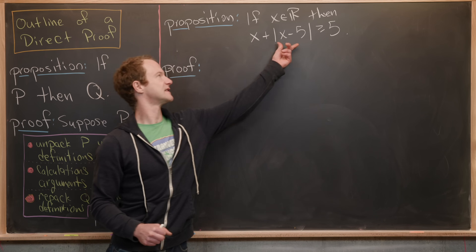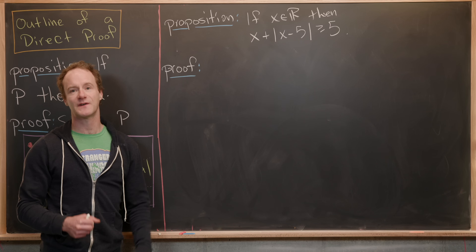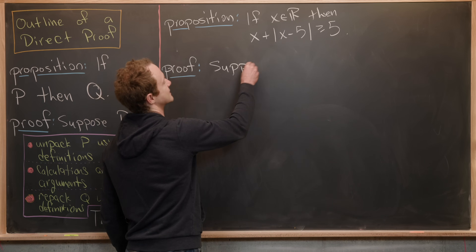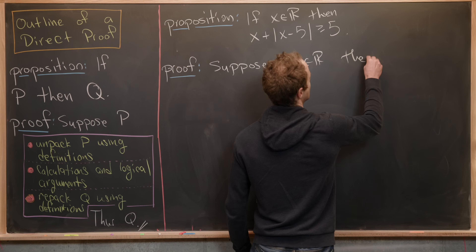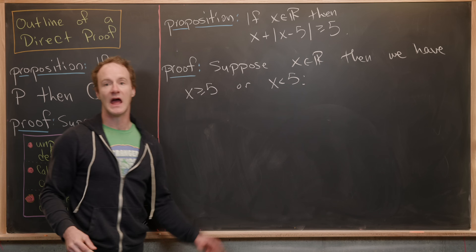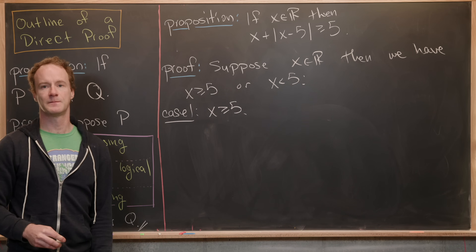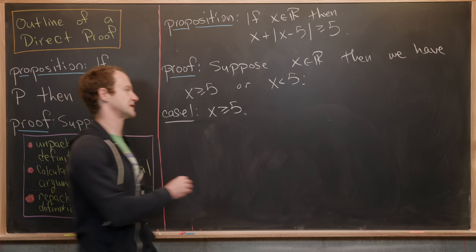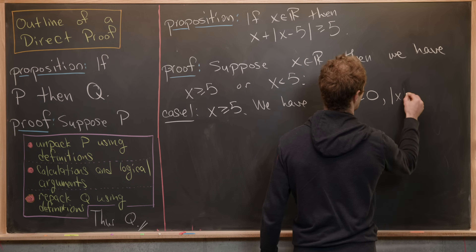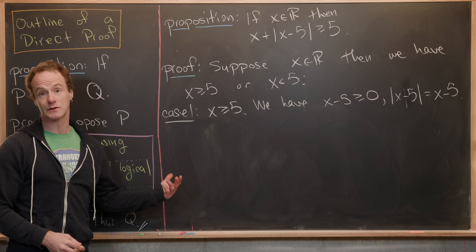The two cases depend on the absolute value. Something changes at x = 5: |x − 5| equals x − 5 on one side and −(x − 5) on the other. So we suppose x is a real number, and we have either x ≥ 5 or x < 5. In Case 1, x ≥ 5, so x − 5 ≥ 0, which means |x − 5| = x − 5. We can remove the absolute values.